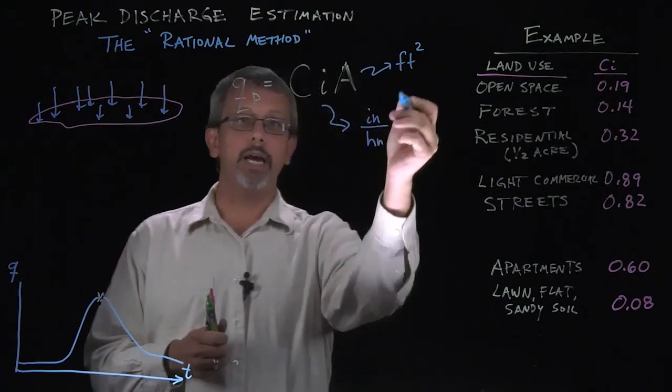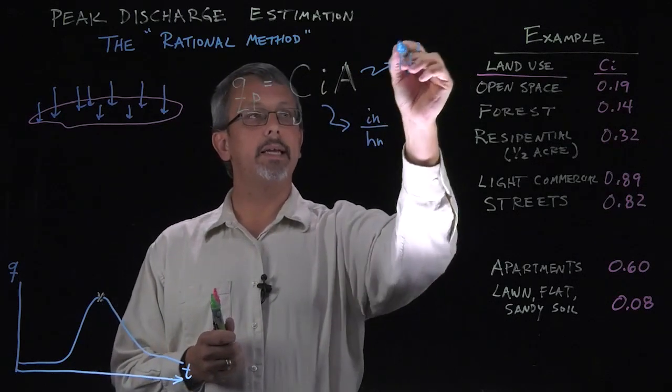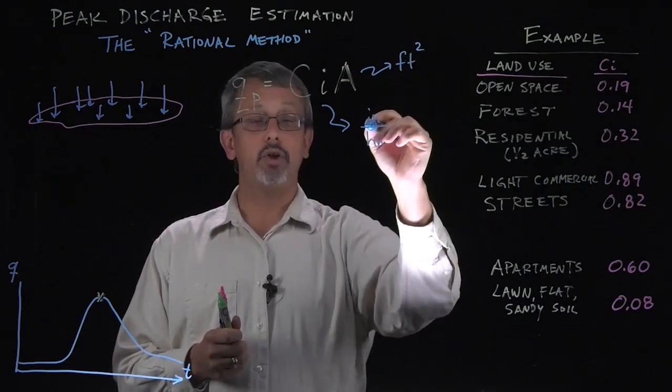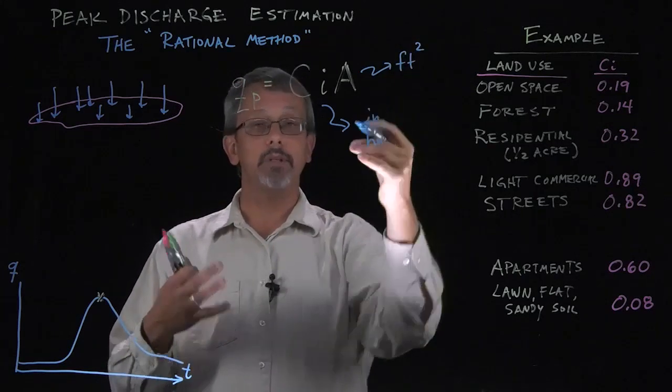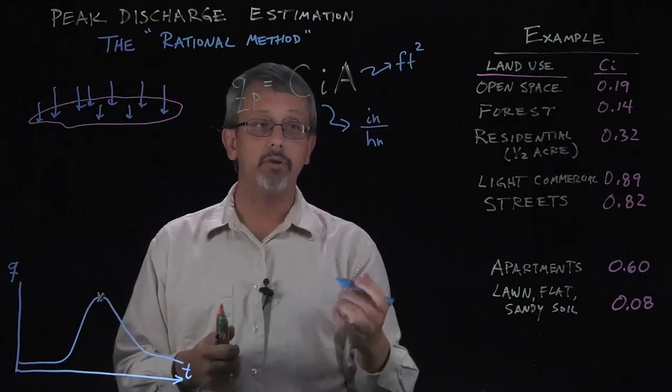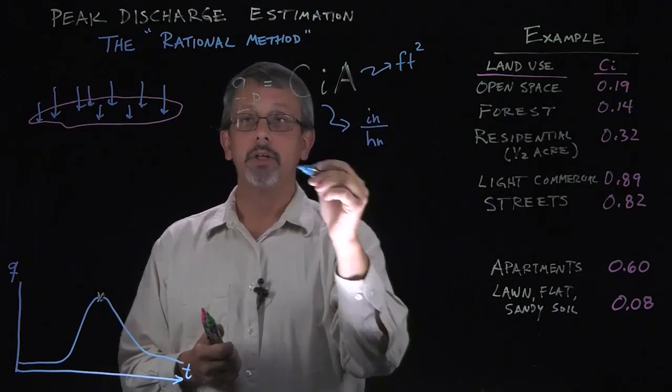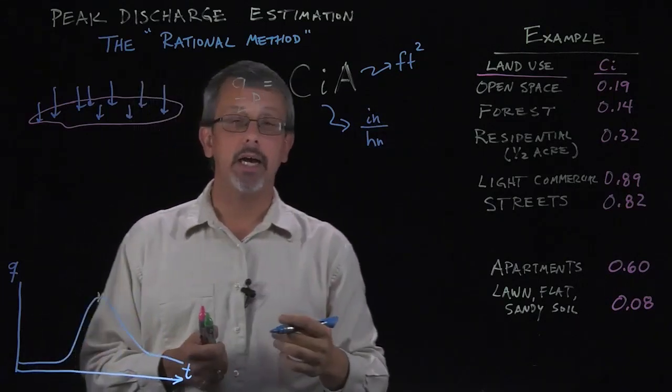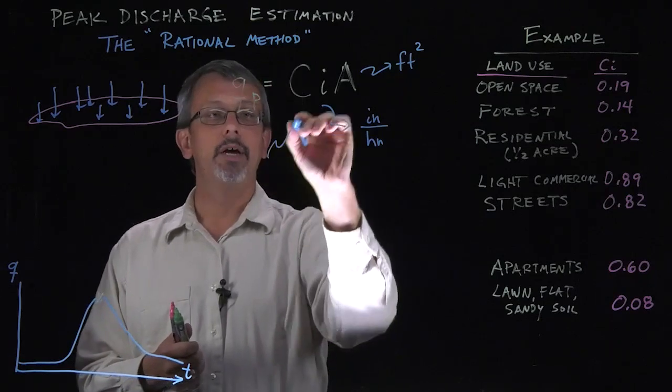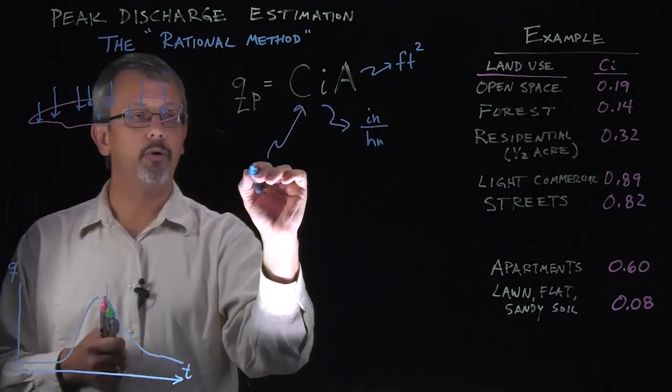Notice if we do that, we're going to get a flow rate in volume. Feet squared times inches would be cubic feet if we do the right conversions, volume over time. So this is going to end up being something in volume over time. And then we simply have this number here called the runoff coefficient.